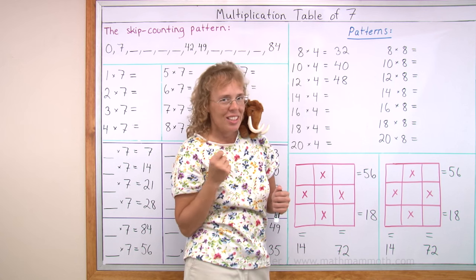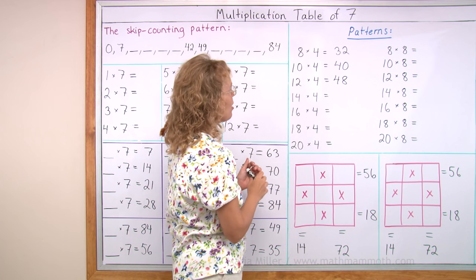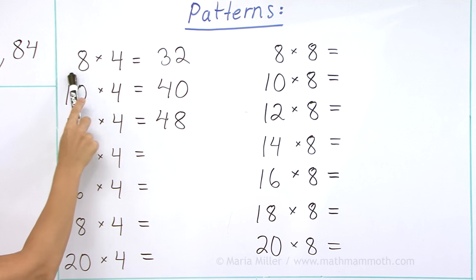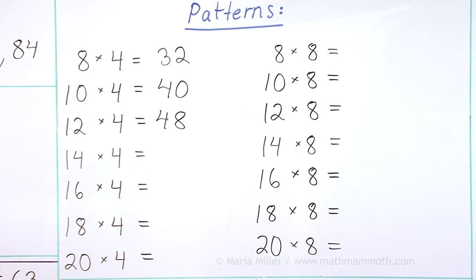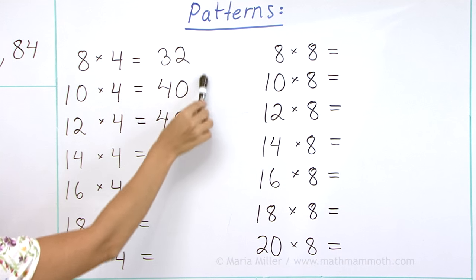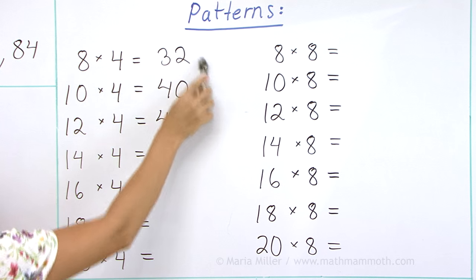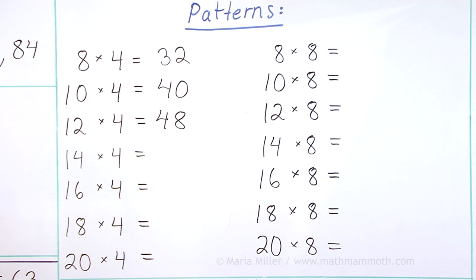In essence, we're skipping every other one because between 8 times 4 and 10 times 4, there would be 9 times 4. And here would be 11 times 4, but we're skipping that. So over here, instead of going by fours, we're going by eights, right? Eight more, eight more. So that's the pattern.